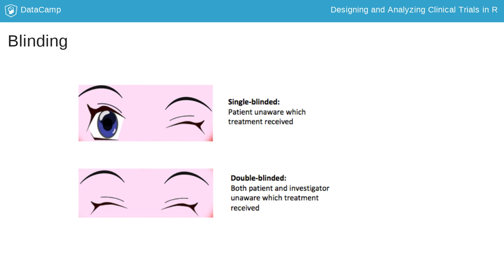Another way to help us accurately estimate the treatment effect is by blinding. In a single-blinded study the patient will not be aware of which treatment they receive. In a double-blinded study neither the patient nor the study investigator is aware of which treatment is given. This can help reduce bias, for example in the assessment of the treatment effect and how the study is conducted. Often this can be done by using placebos that resemble an active treatment. However, blinding may not be achievable, say in a trial comparing surgery with antibiotics for the treatment of appendicitis.